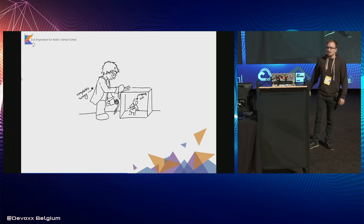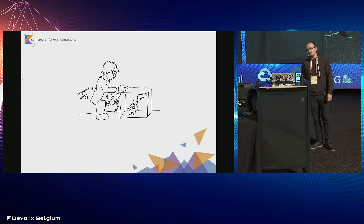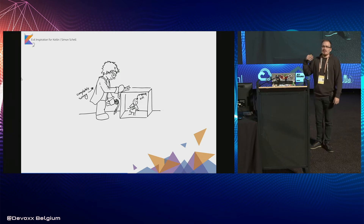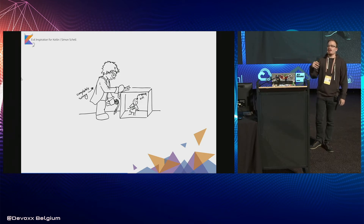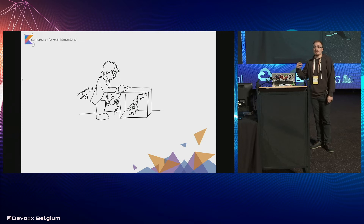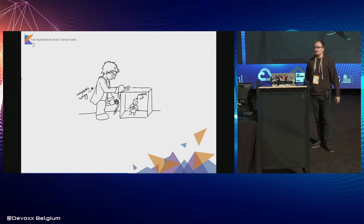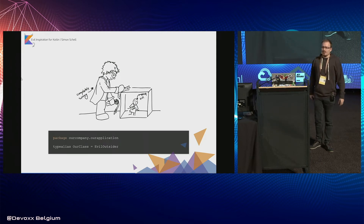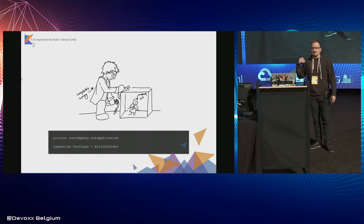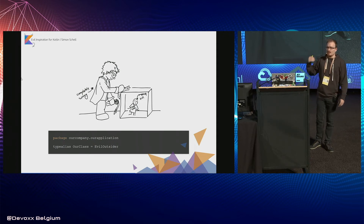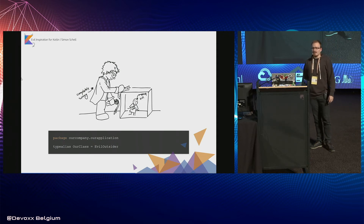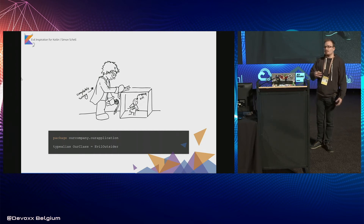For that, we will use package declarations. Those simply allow us to inject our type aliases into already finished packages and classes without even touching the files necessary for those to work. Just add the package you need as a scope to declare your type alias in, and you're already finished. Pretty simple.